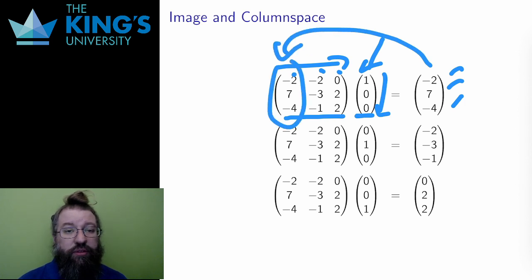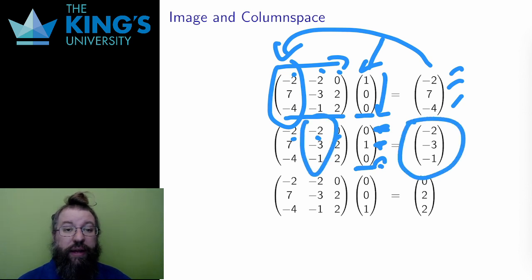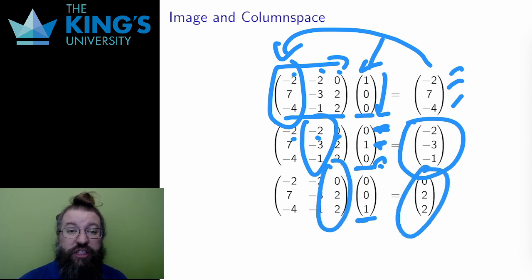Well, what about acting on the second axis vector e_2, (0, 1, 0)? Well, if I go across the rows and down the vector, the first and third terms are all 0, and the process only picks up the second term. The output is (-2, -3, -1), the second column. Finally, acting on e_3, (0, 0, 1) gives the third column in a similar way. And feel free to check all the matrix actions yourself to make sure.